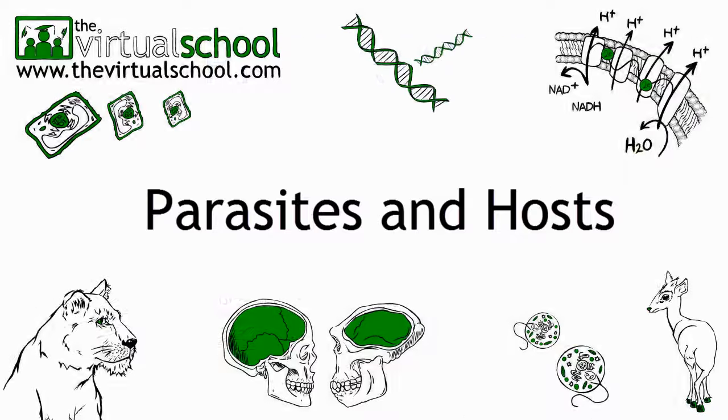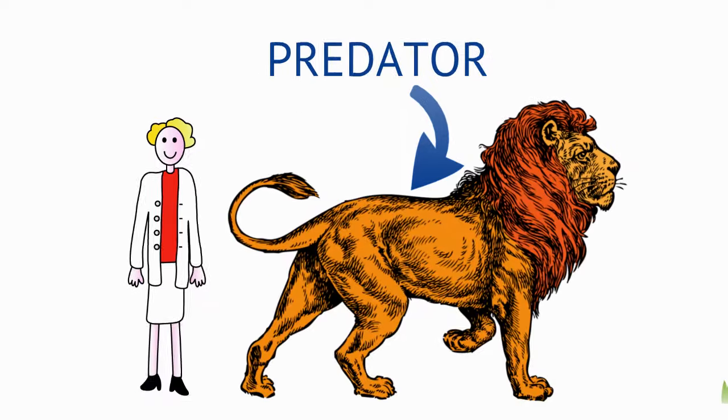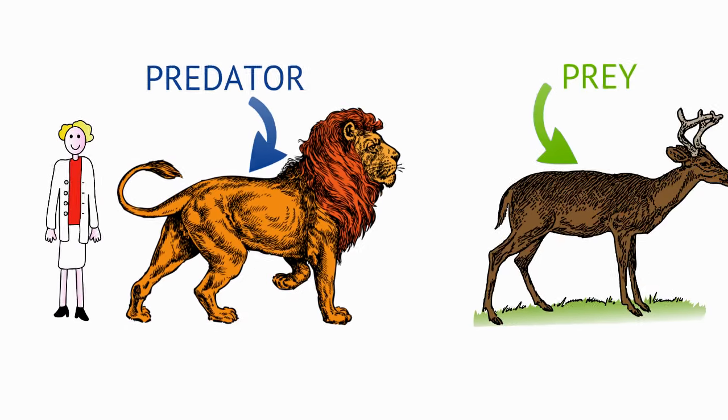Some animals are called predators — they hunt and kill other animals for food. The animals that are hunted and eaten by predators are called prey.